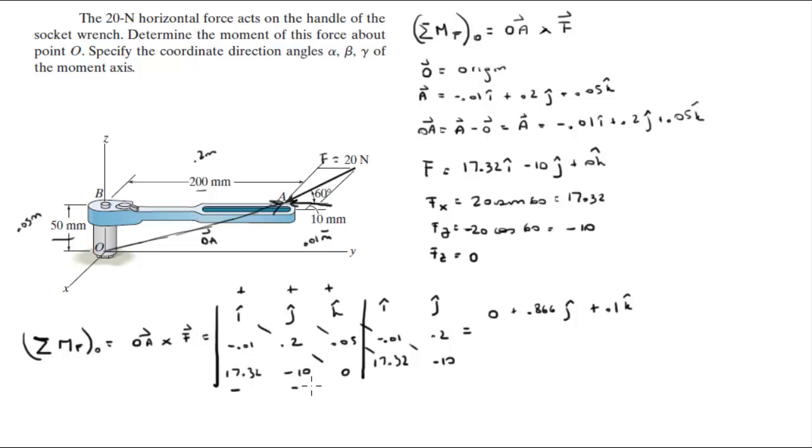Now you do your negative diagonals, negative diagonal, negative diagonal, negative diagonal. 17.32 times 0.2 times k is negative 3.46k. Notice I like to line up my unit vectors, make it easier. Negative 10 times 0.05 times i is 0.5i because it's negative already. So it's negative times a negative is a positive. And the last one is 0 times 0.01 times j, which is minus 0.